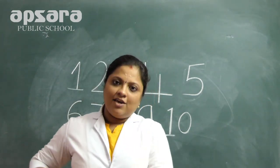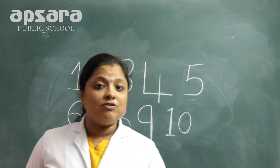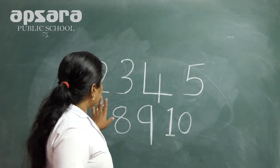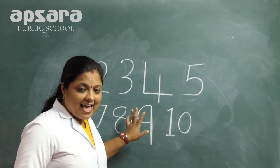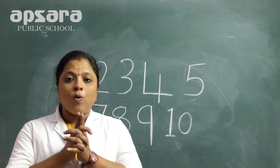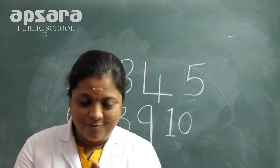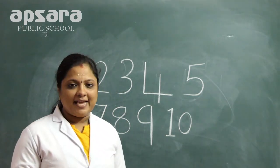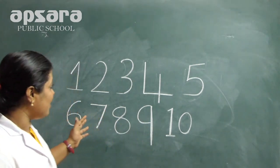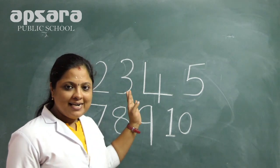My dear kids, you learned how to write 1 to 10. You should repeat like this and write numbers 1 to 10 in your sky book, page 1. Dear kids, you have seen the numbers and already learned how to write 1 to 10.